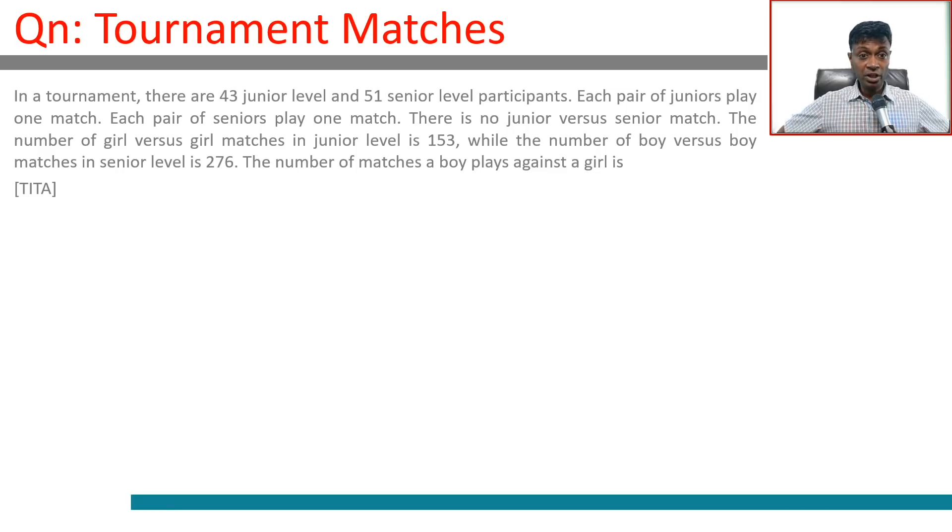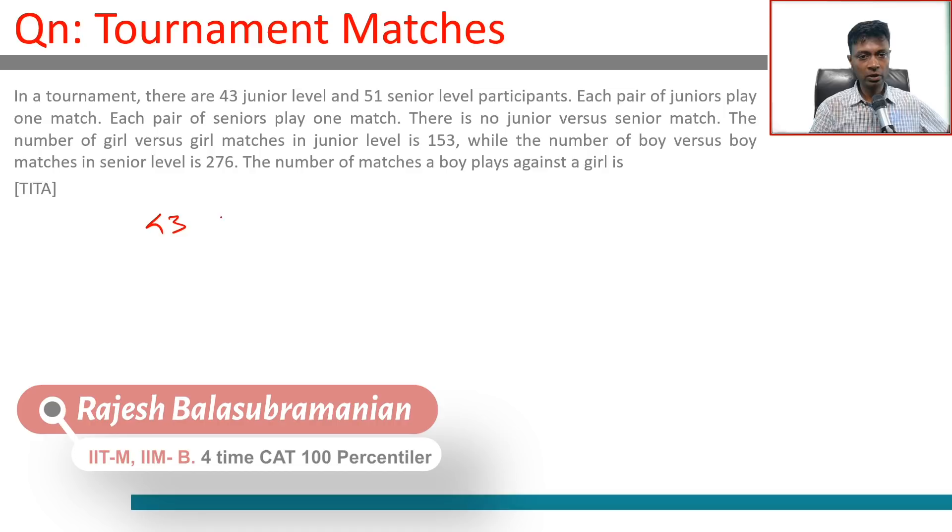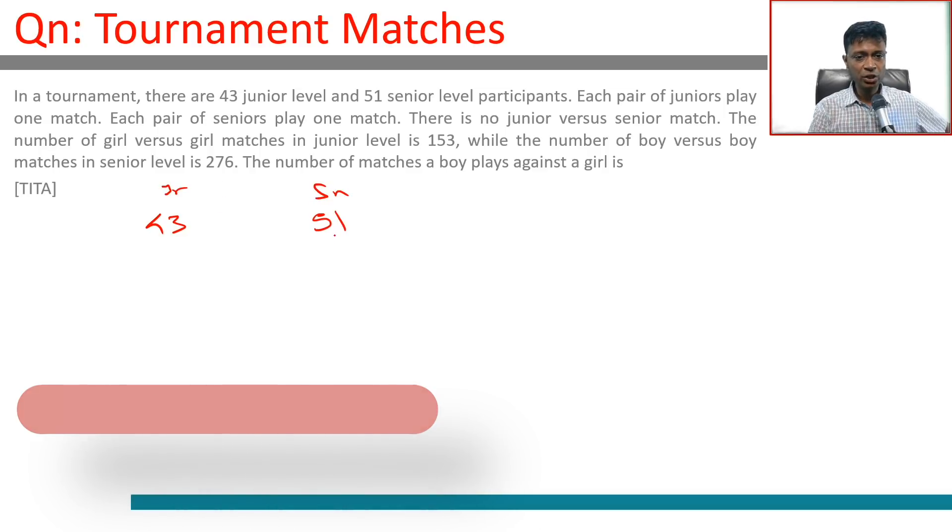In a tournament, there are 43 junior level and 51 senior level participants. Each pair of juniors play one match, and each pair of seniors play one match. There is no junior versus senior match.